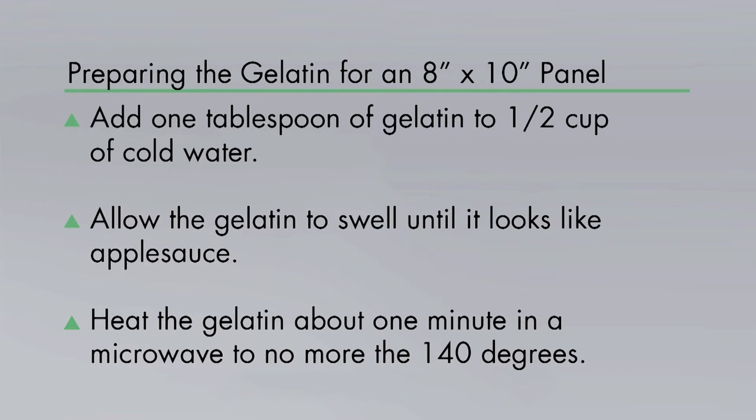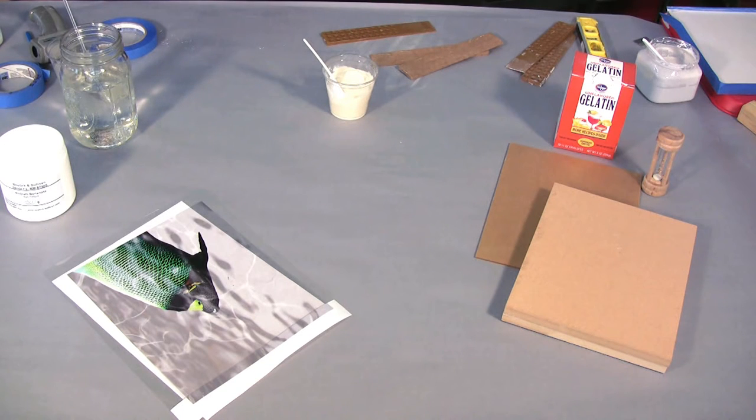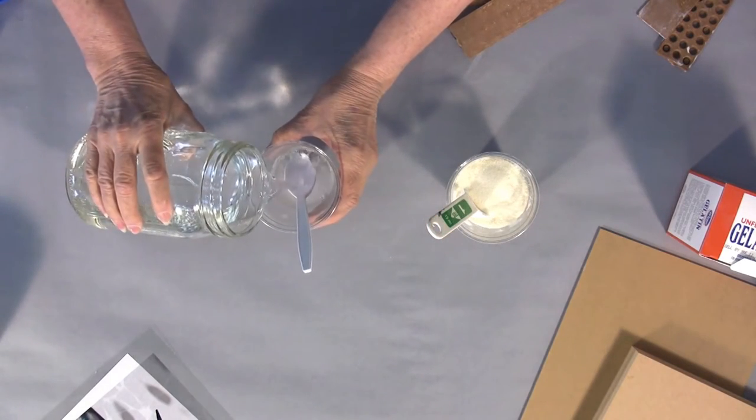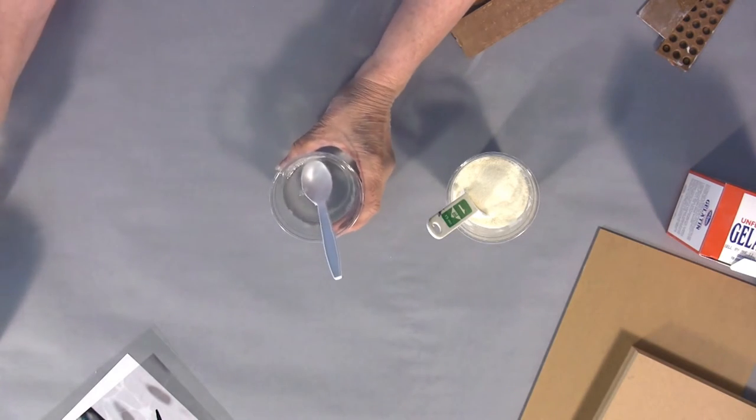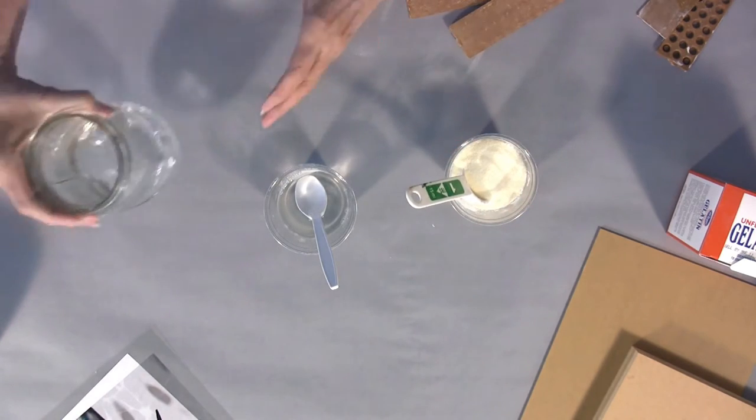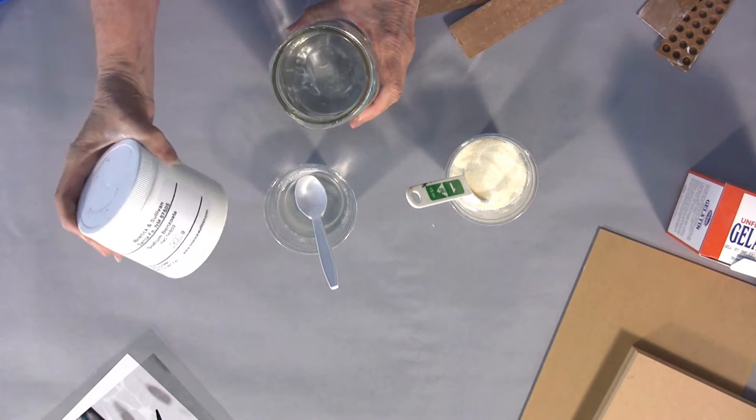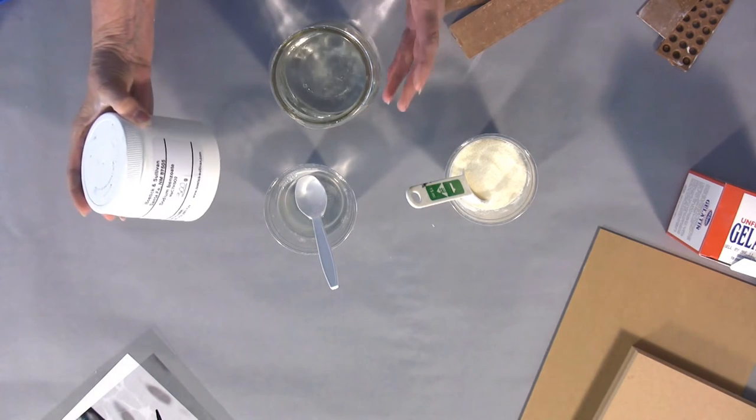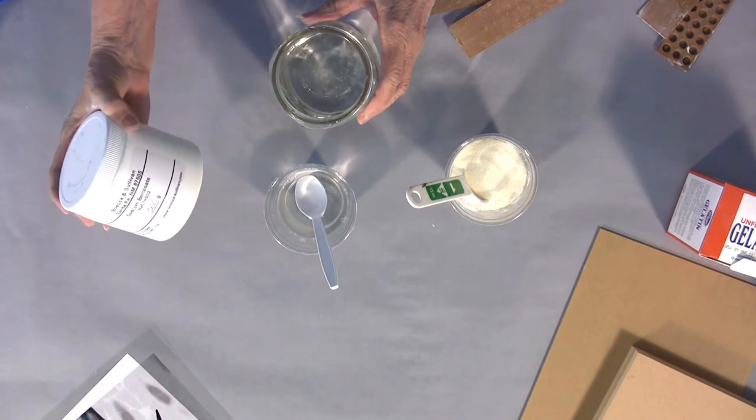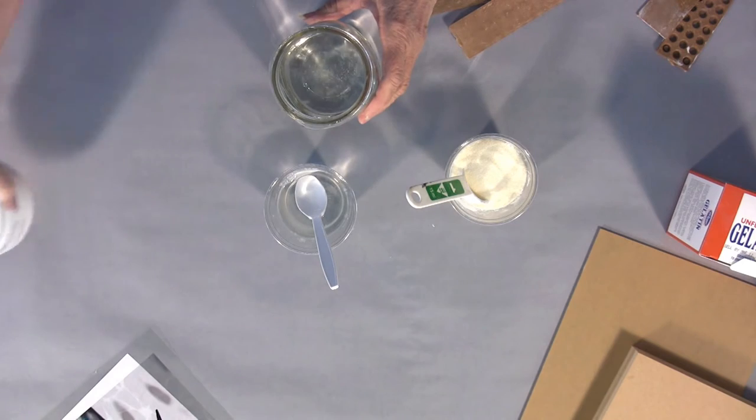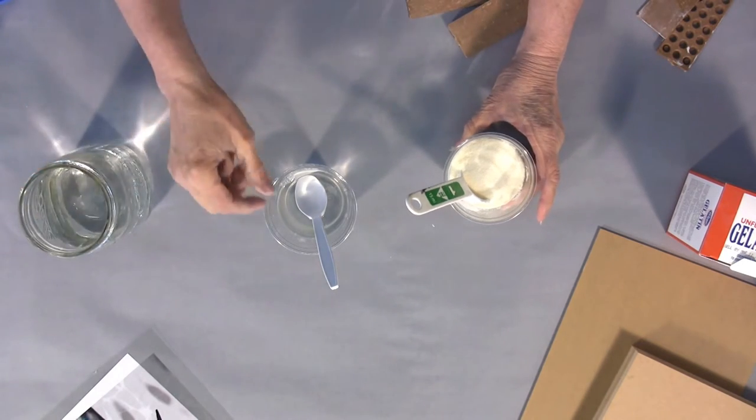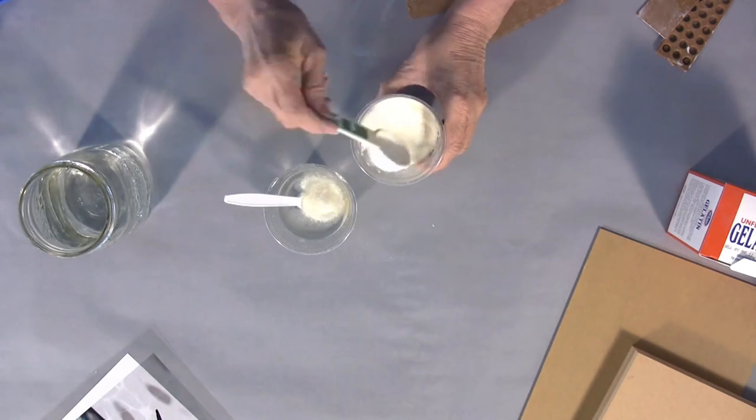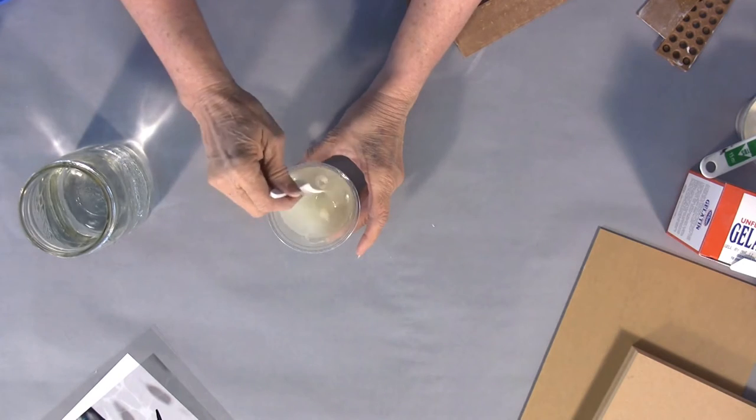To mix up the gelatin you're going to place a tablespoon of it into some water. Add a half cup of water. In this water I have placed half a teaspoon of sodium benzoate and what sodium benzoate does is it acts as a preservative. It's in food, it's a safe product to use. About a half teaspoon in a quart of water will inhibit any mold growth in your gelatin. So in a half cup of water you're going to add one tablespoon of the pork gelatin or the store-bought food gelatin.